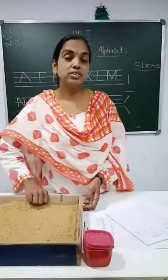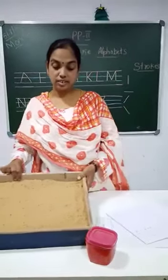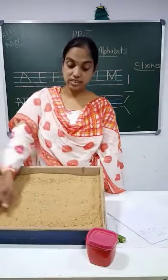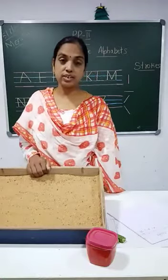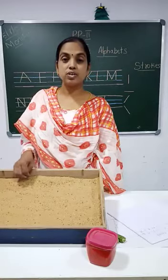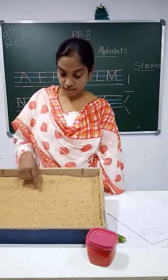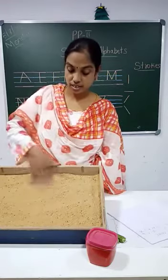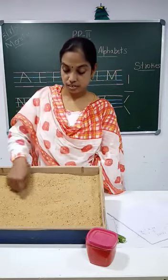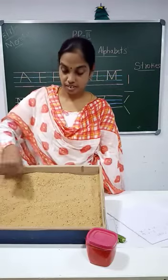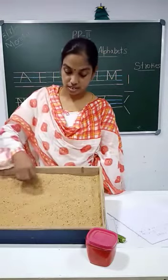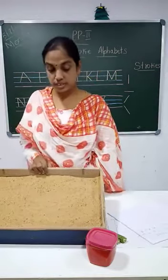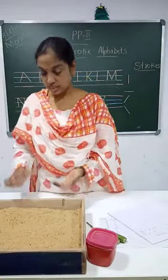We learnt A-tracing. The second one is sand tracing — you trace in the sand. At home if you don't have sand, you can use salt, rava, or atta. See, this is sand tracing: standing line, sleeping line, left slanting line, right slanting line — this is sand tracing.